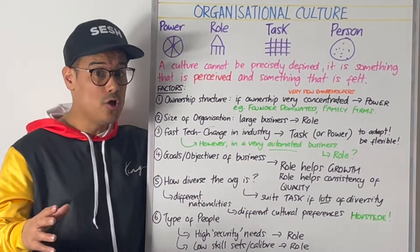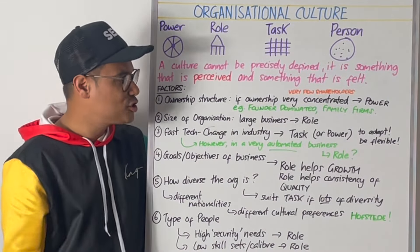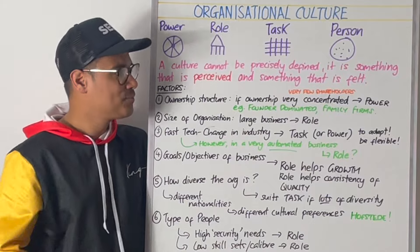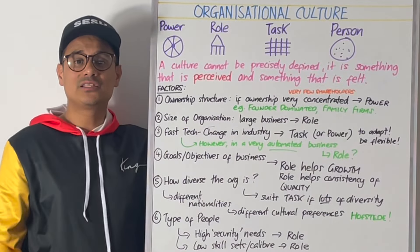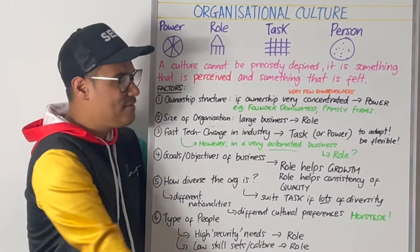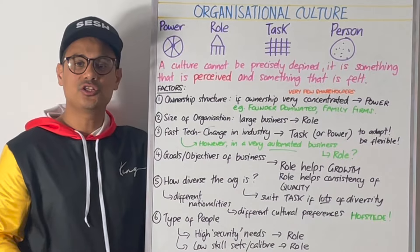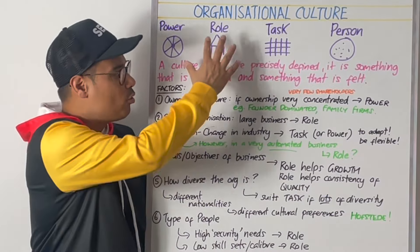The first one is ownership structure. If ownership is very concentrated, maybe there's just one shareholder, one dominant shareholder, then likely power culture is going to be the outcome. Founder-dominated business, family firms is where you might see that. The second is the size of the organisation. If it's a large business, probably role culture will suit.